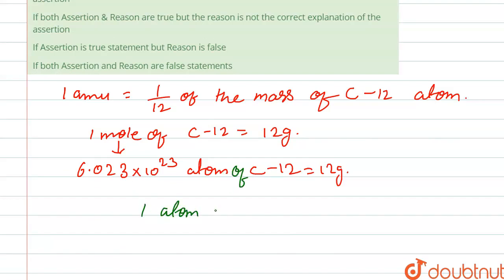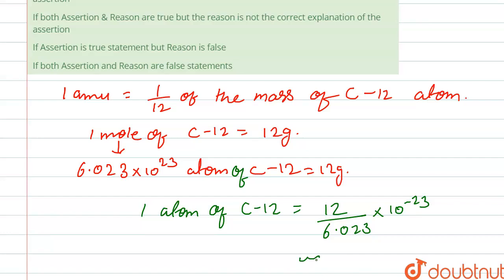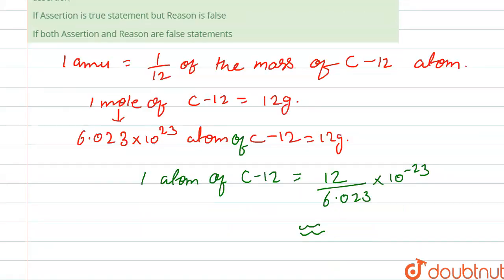One atom of C-12 is equal to 12 divided by 6.023, which gives 1.99 × 10⁻²³ gram.